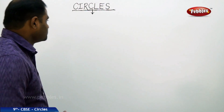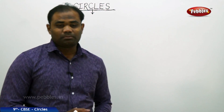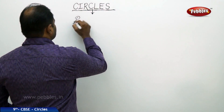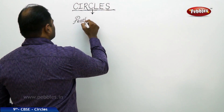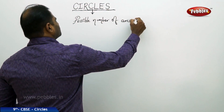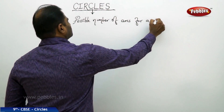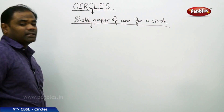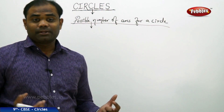Since there are different numbers of arcs, now that we have defined an arc to be a part or piece of a circle, let's see the possible number of arcs for a circle. This session is about investigating the possible number of arcs for a circle. So let's take a circle to investigate the possible number of arcs.